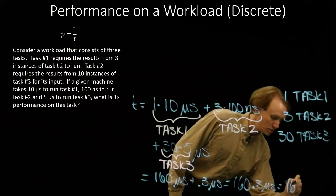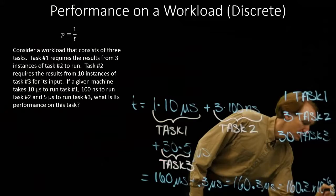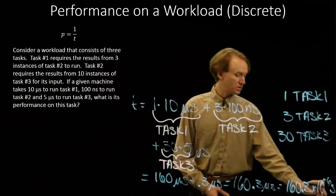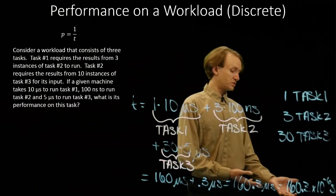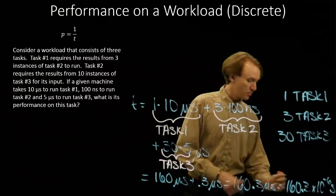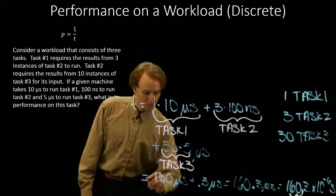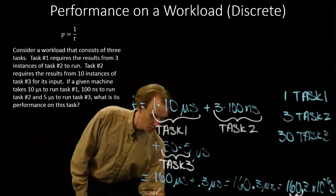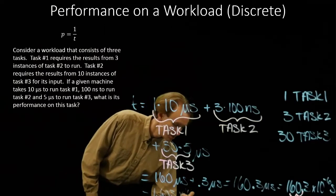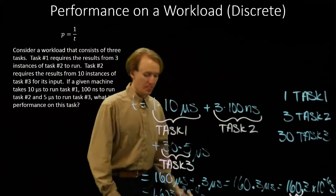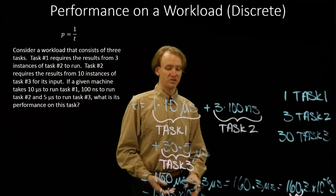Or one hundred sixty point three times ten to the minus six seconds. Now I can get rid of the times ten to the minus six by adding a whole bunch of zeros in the front. Or I can convert this to normalized scientific notation by moving the decimal point over two places. That would give me one point six zero three times ten to the minus four seconds. And then that I can put into the performance equation and we'll get actual performance number out.